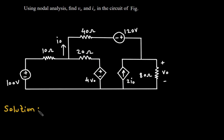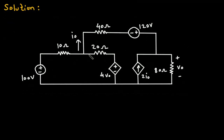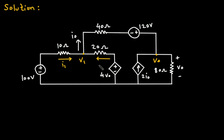Solution. First we will redraw the circuit. Let's say this is node 1 with voltage V1, and this will be node 2 with voltage VO. Let's assume the direction of current. Let's say this is current I1, this is current I2, and this is current I3.